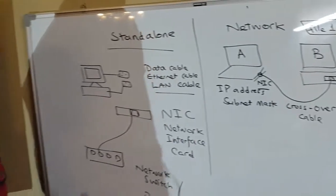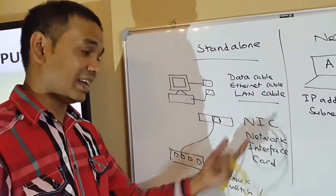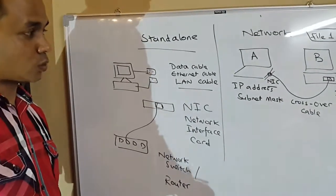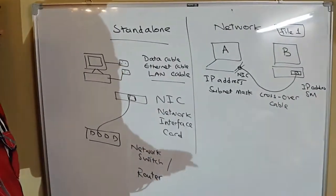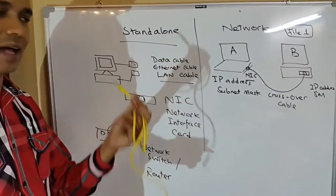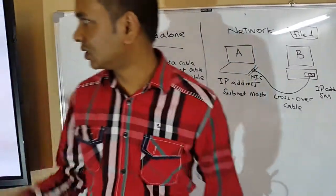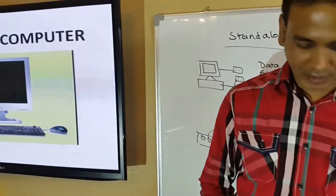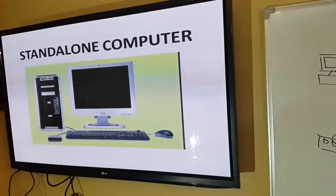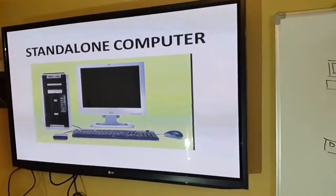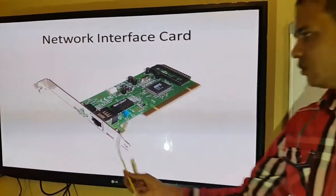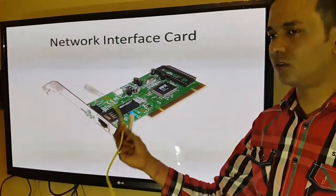So you have well understood: for a computer to connect to a network, it should have an NIC card — a network interface card — and you should connect that network interface card with a LAN cable. If you see a standalone computer on that screen, for it to become compliant with the network, it will need an NIC card and a LAN cable.